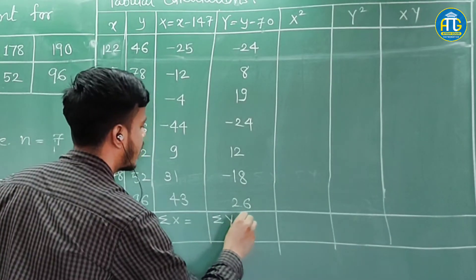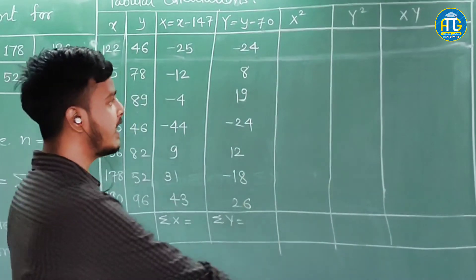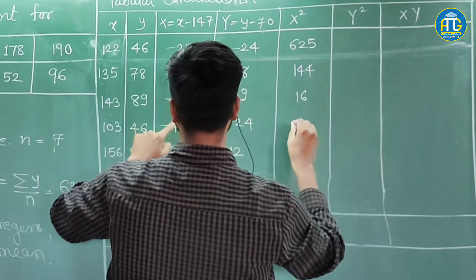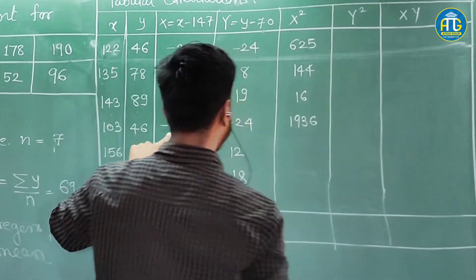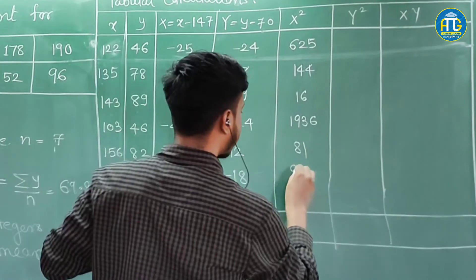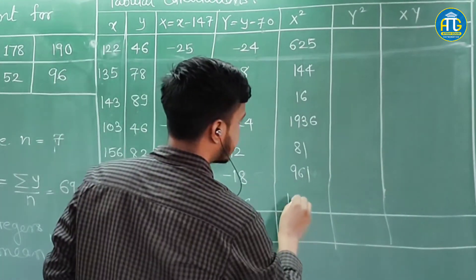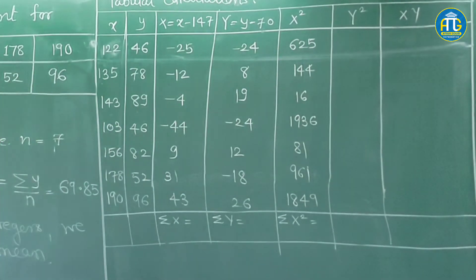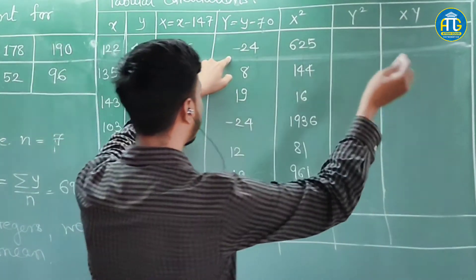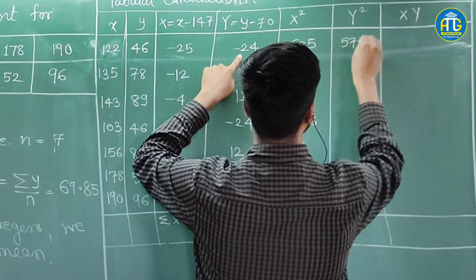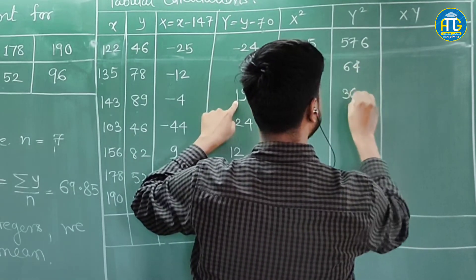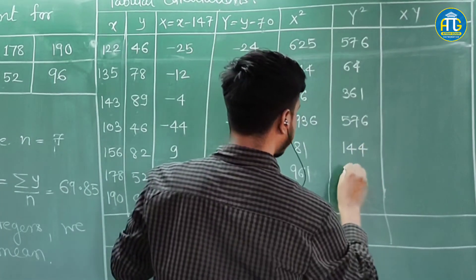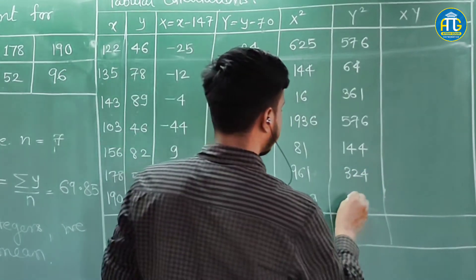Now find summation X and summation Y. For X², the values are: 625, 144, 16, 1936, 81, 961, 1849. For Y², the values are: 576, 64, 361, 576, 144, 324, 676.